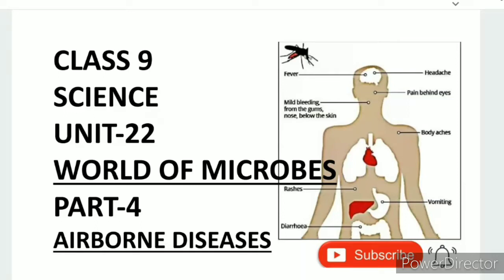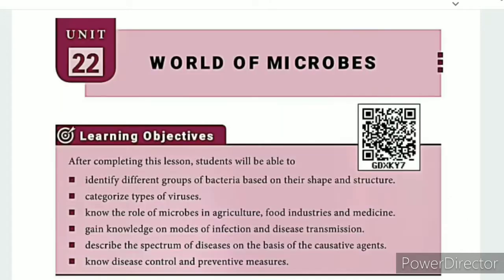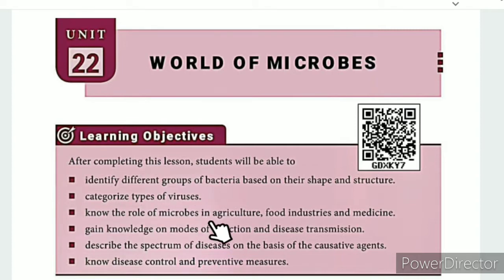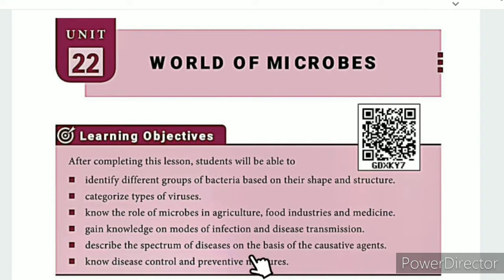Greetings from SS Class 9 Science, Unit 22: World of Microbes, Part 4 — Airborne Diseases. The learning objectives are: identify different groups of bacteria based on their shape and structure, categorize types of viruses, know the role of microbes in agriculture, food industries, and medicine, gain knowledge on modes of infection and disease transmission, and describe the spectrum of diseases on the basis of causative agents, disease control, and preventive measures.